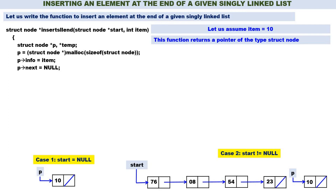Now let us go to the cases. If start is equal to null — Case 1. The node is already ready with info = 10 and address part = null. Only thing is start should contain the address of this new node. Therefore, start = p. Case 1 is over.